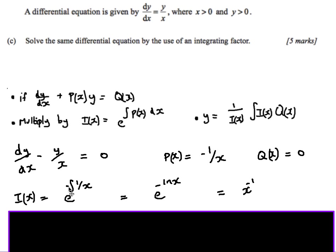1 over x integrates to ln x, so I get e to the minus ln x. Bringing the minus inside gives ln x to the minus 1, and then e and ln are inverse functions, so I get x to the minus 1. Very often I end up with some kind of ln that then disappears — and this is my integrating factor.